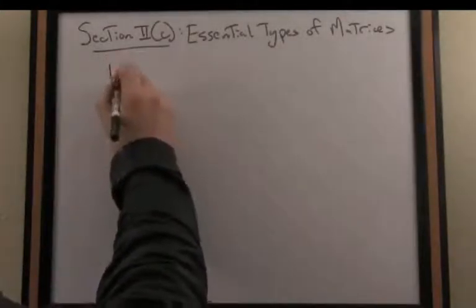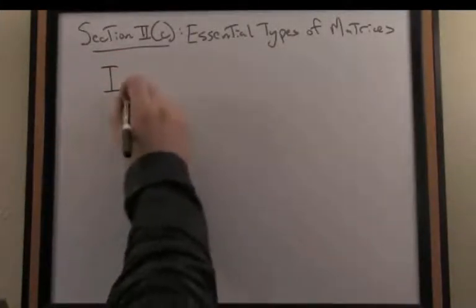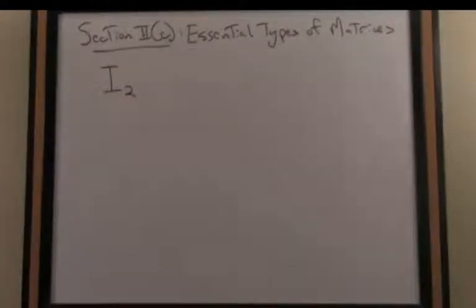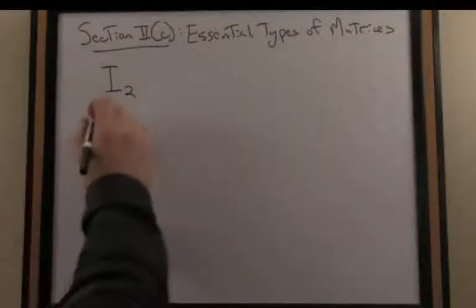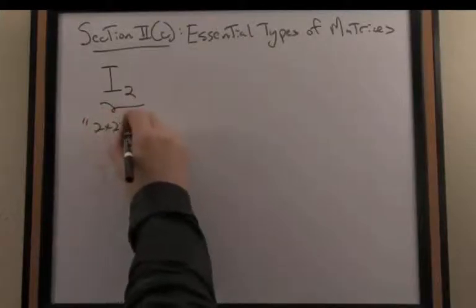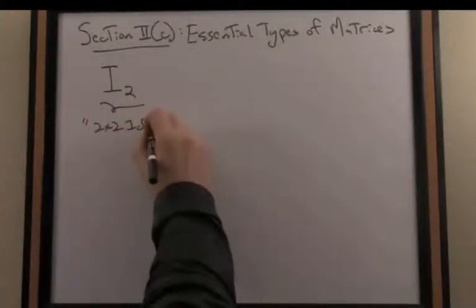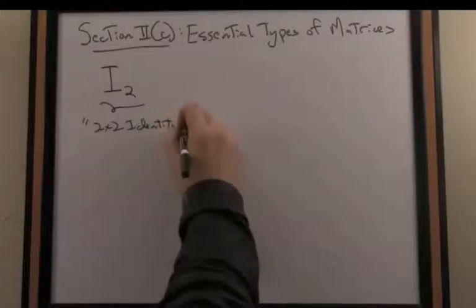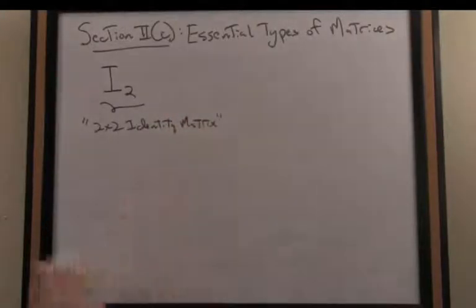The identity matrix is usually written as a capital I, and I'll indicate the subscript here, 2, to indicate the fact that I'm talking about or referring to the 2x2 identity matrix. The identity matrix is always a square matrix, and the subscript indicates essentially the dimension of that matrix.